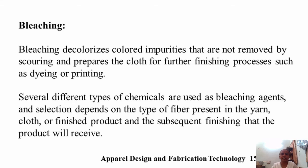Bleaching decolorizes colored impurities that are not removed by scouring, and prepares the cloth for further finishing processes such as dyeing or printing. Several different types of chemicals are used as bleaching agents, and the selection depends on the type of fiber present in the yarn, cloth, or finished product, and the subsequent finishing that the product will receive.